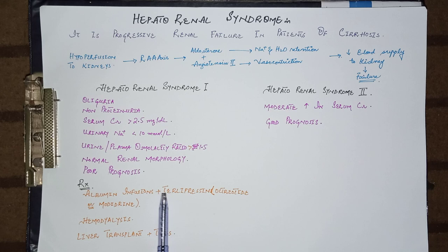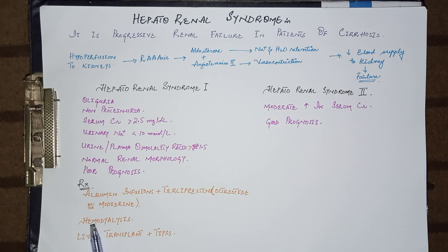Terlipressin is a vasopressin analog. If terlipressin is not available, then octreotide or midodrine can be used in its place, followed by hemodialysis. However, hemodialysis usually should not be performed because it does not improve the survival rate in hepatorenal syndrome.